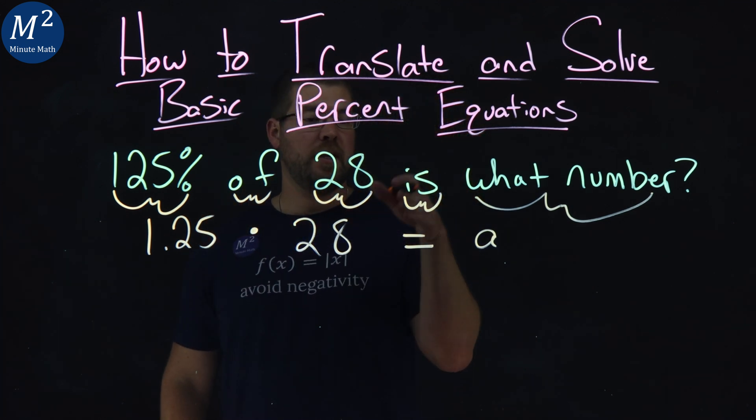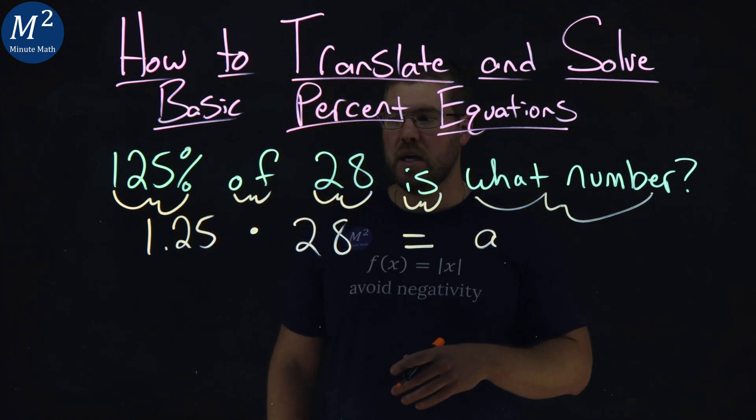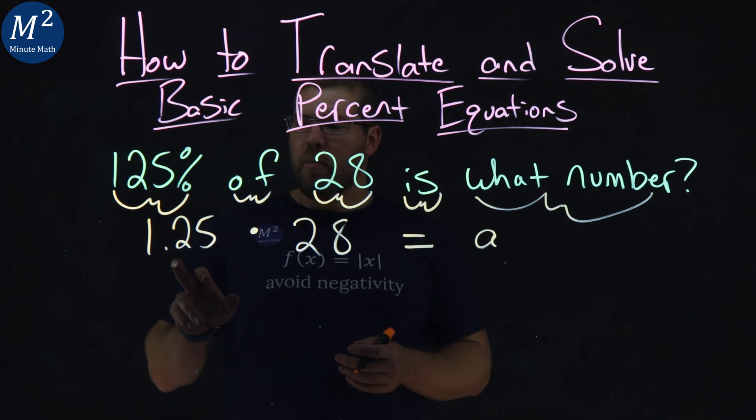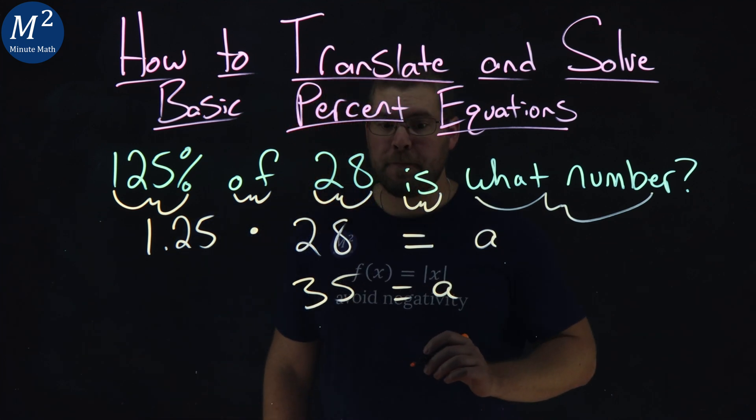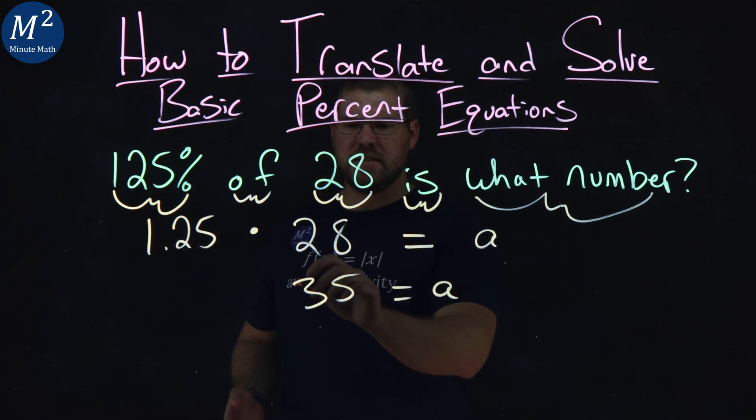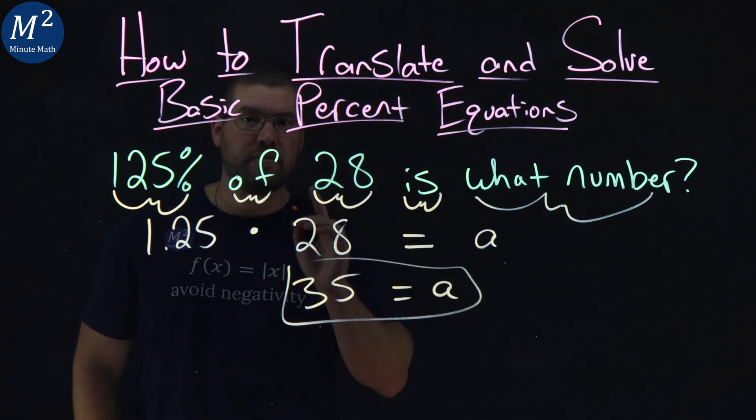1.25 times 28 equals A—let's simplify, or solve really. 1.25 times 28 is 35, and that is equal to our letter A. And now we have A by itself here. Let's rewrite this as the final statement.